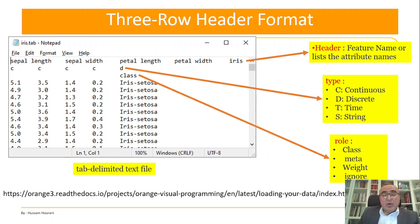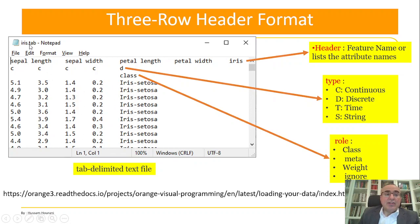In Orange Data Mining there are different types of using datasets. One of them is called the three-row header format — this is the iris dot tab file, called dot tab because it's a tab-delimited text file with tabs between the values.